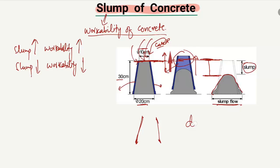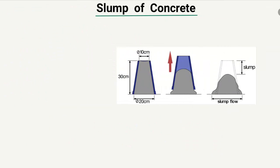There are different classes of slump, and each class has a different application. For example, for a dam structure we have different slump values, for buildings we have different slump values, and depending on the specific project we have different slump requirements. Here I will explain some of the slump classes, with the range given in millimeters.